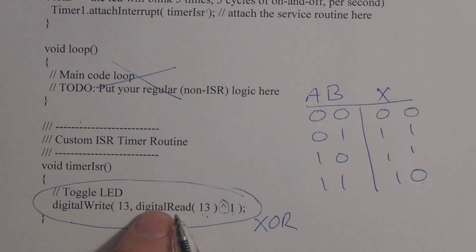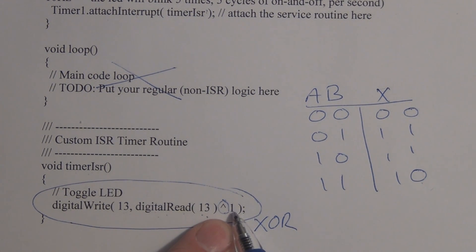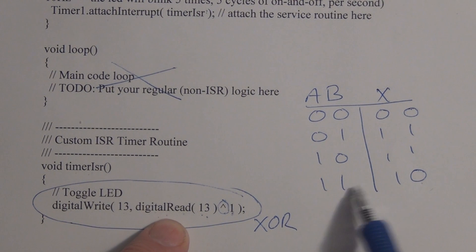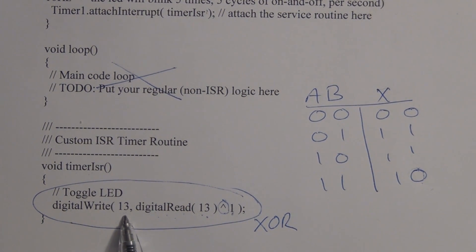If we exclusive OR the digital read 13 with a 1, it will toggle the state of pin 13. If we just assume initially that digital read is a 0, if you exclusive OR it with a 1, a 0 and a 1 with exclusive OR will produce a 1. Then the next time around, it will be exclusive OR with a 1 and a 1, and a 1 and a 1 produces a 0. So it continually toggles the state of pin 13, and thus toggles the state of the LED attached to pin 13.